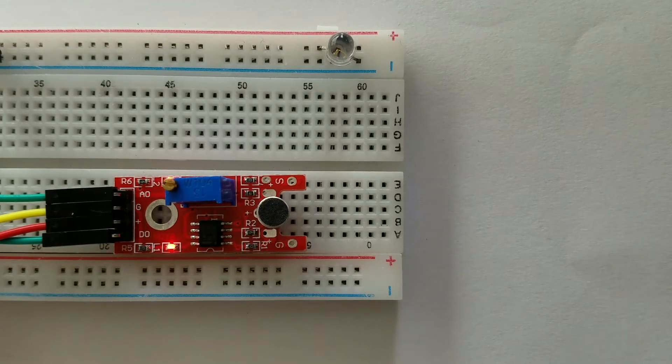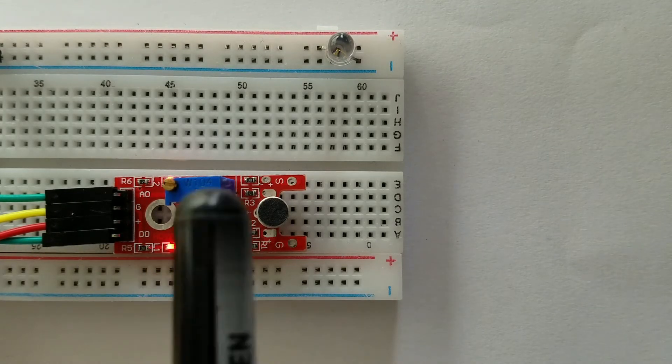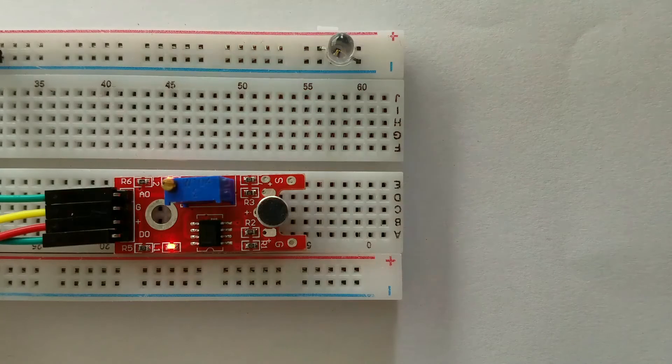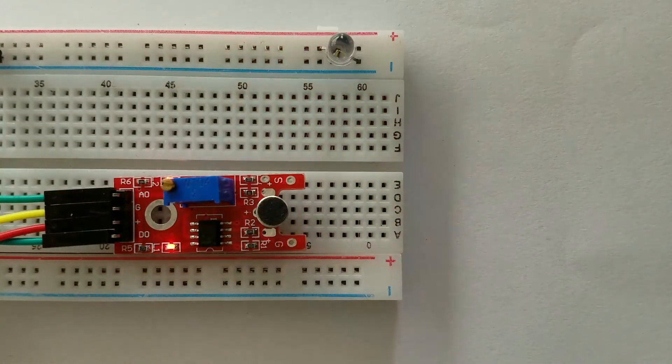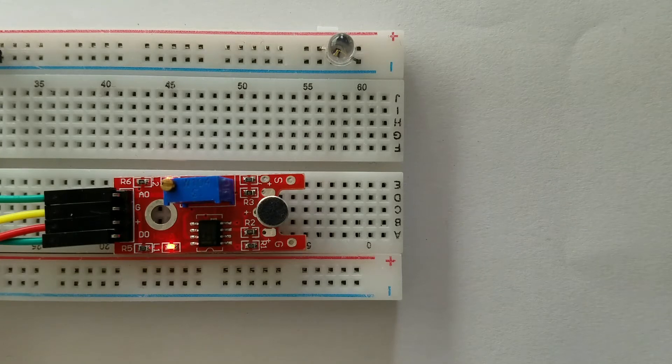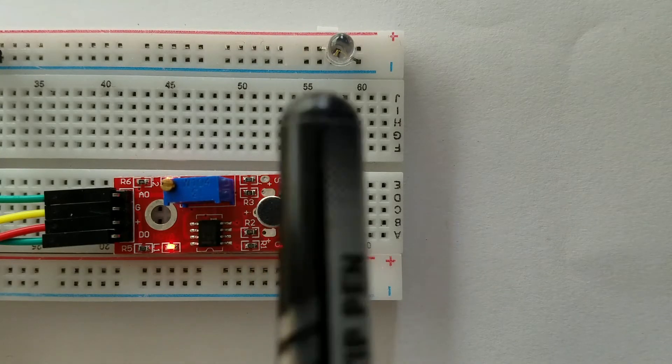In normal state, the digital output that this module will give is high. But when the sensor detects something, the digital output that the module will give is low.